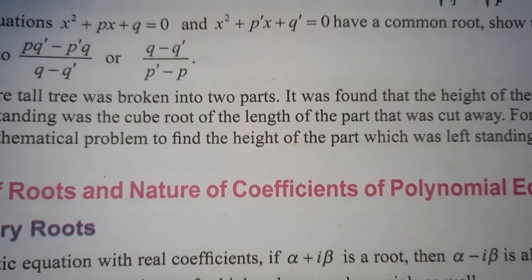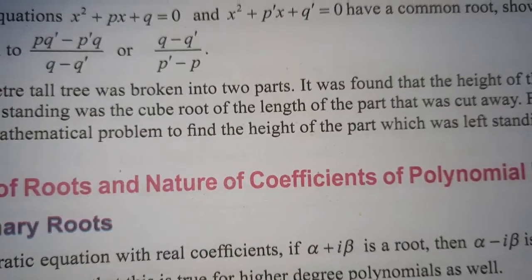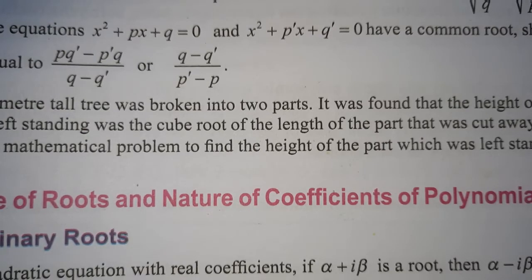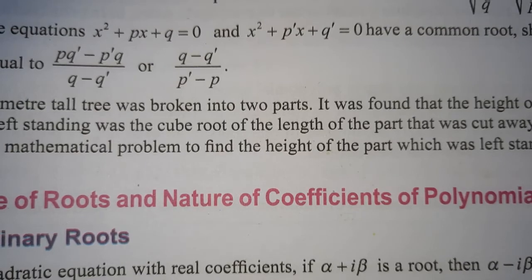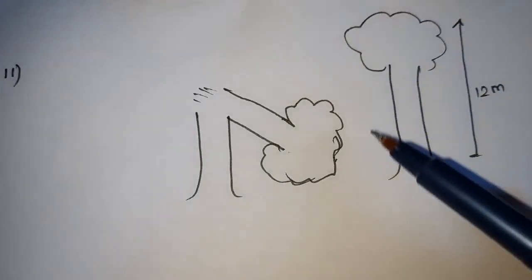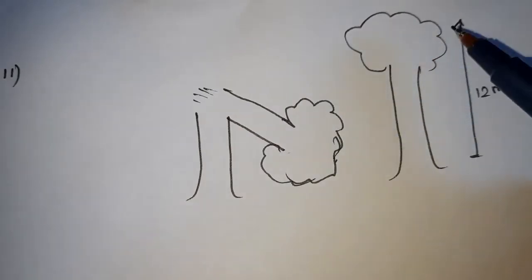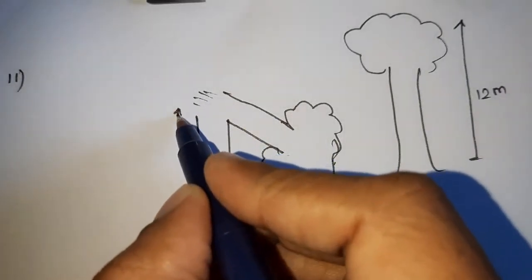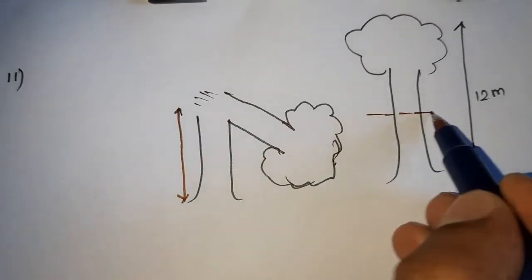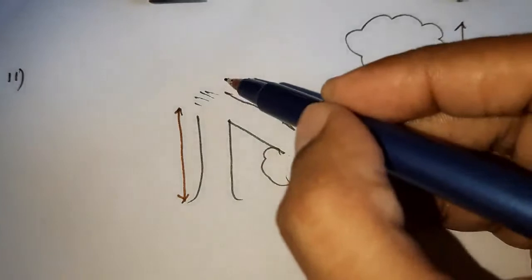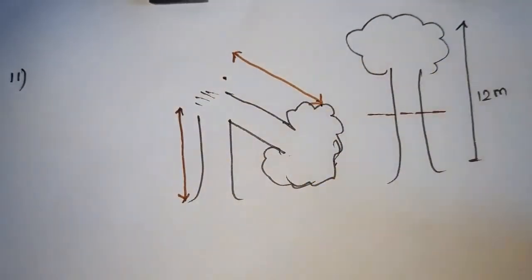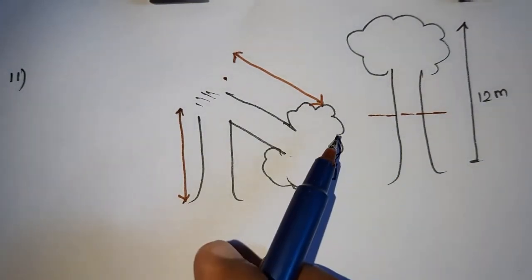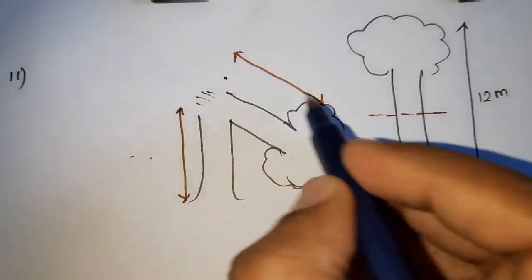So, question number 11. A 12 meter tall tree is broken into two parts. This is the left standing part, and this is the cut away part. The left standing part is the cube root of the cut away part.